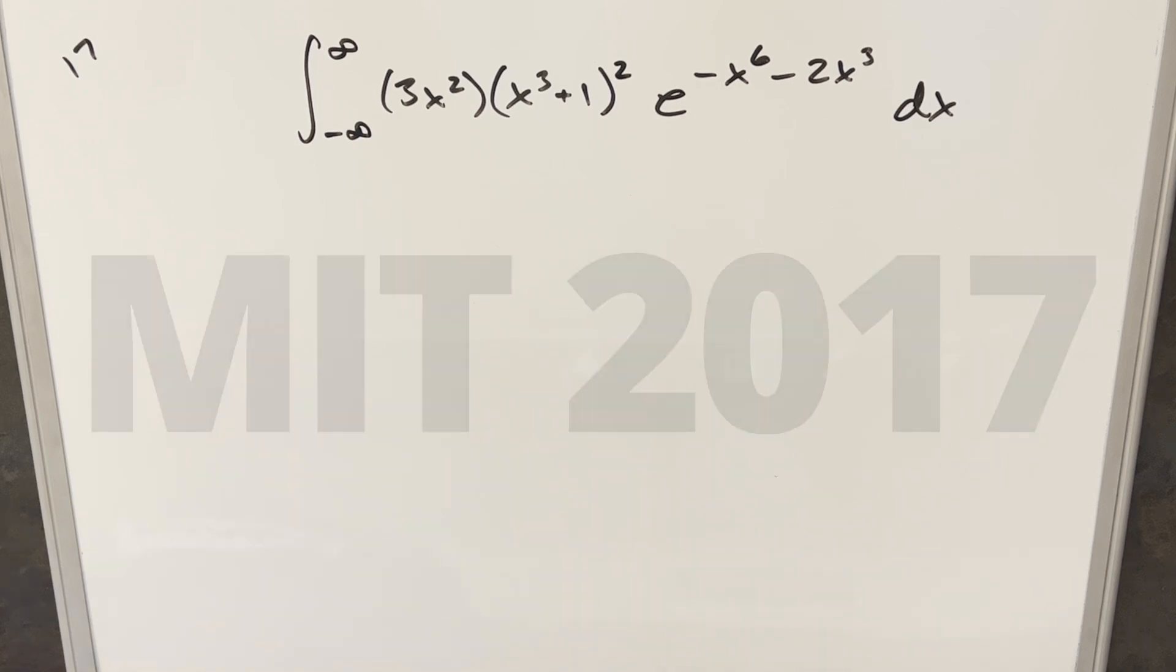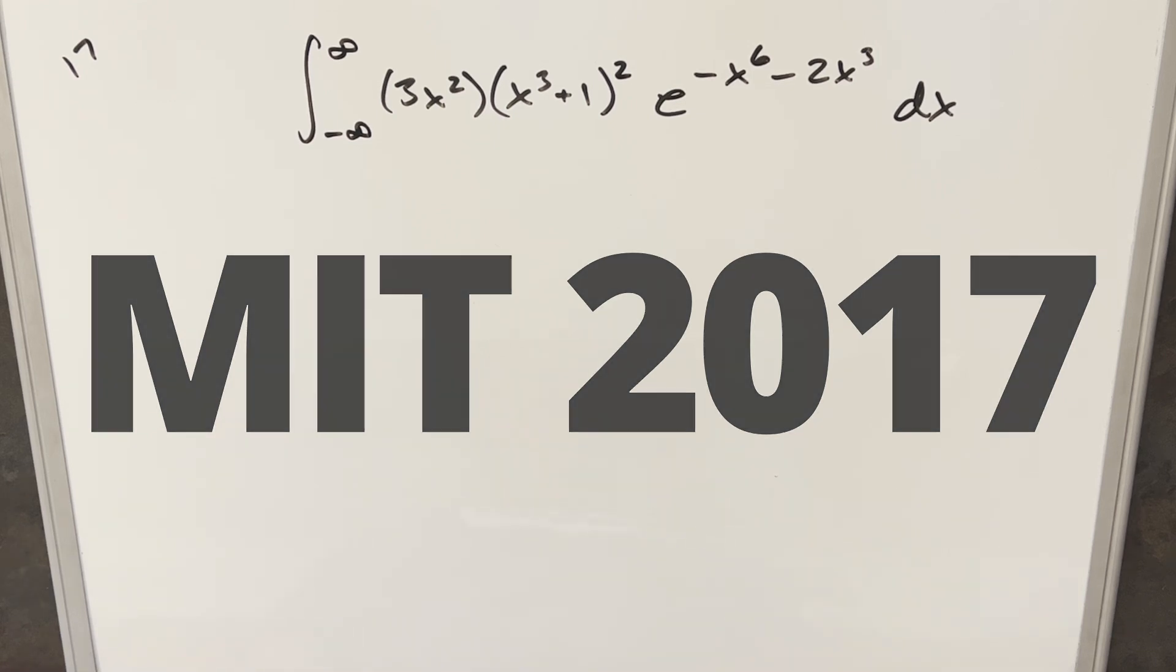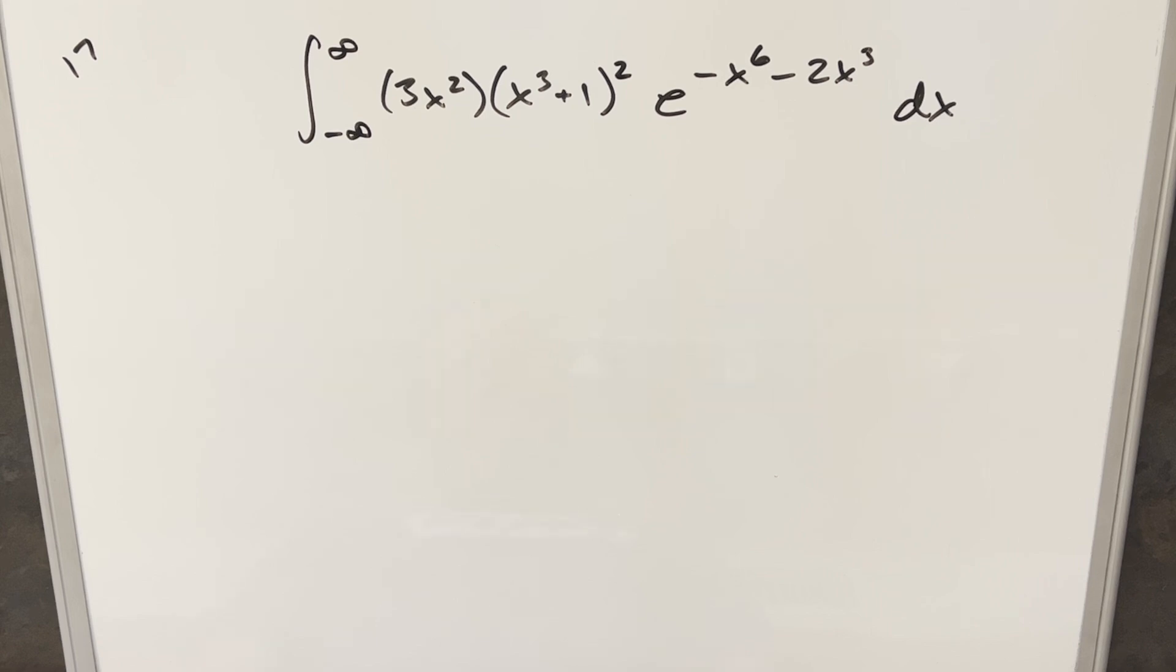Okay, we have a fun problem here today from the MIT integration bee 2017, number 17. We have integral from minus infinity to infinity, 3x squared, x cubed plus 1 squared, e to the minus x to the 6 minus 2x cubed dx.